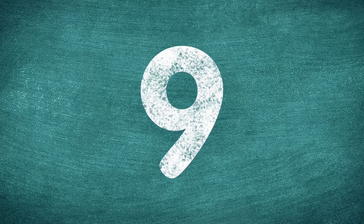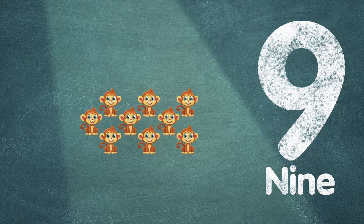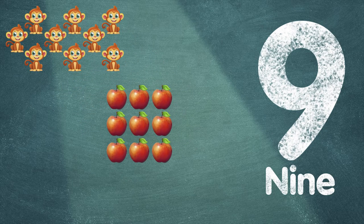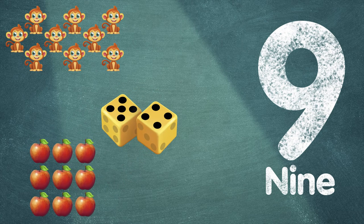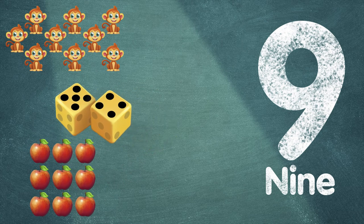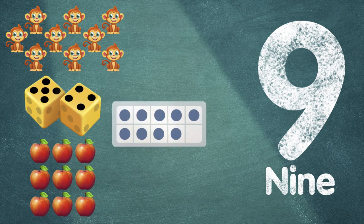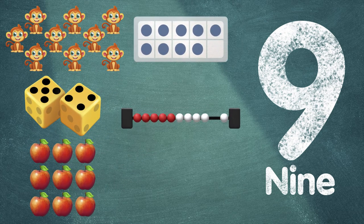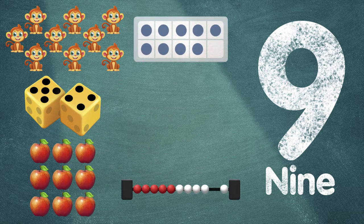This is the number nine. What does it mean? Nine monkeys, nine apples. Look, we can show nine in so many different ways.